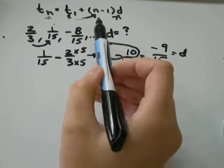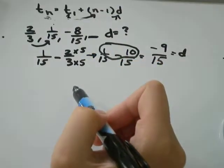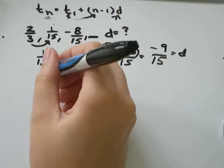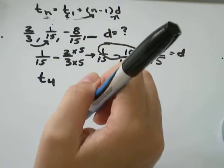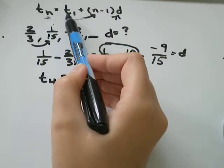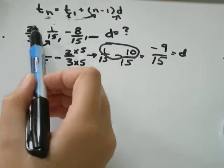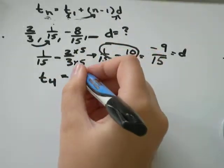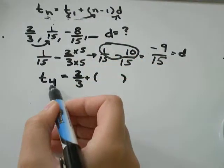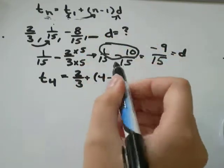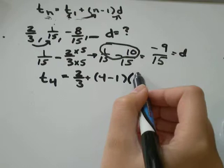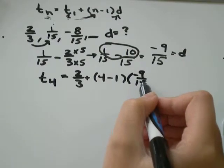Let's say you're being asked to find the number that would come next, the fourth term. So I'm finding t_4 for the fourth term equals, t_1 will be the first term in the sequence, in this case it's 2 over 3, plus n minus 1, n is equal to 4 because it's the fourth term, and then times the common difference, which is negative 9 over 15.